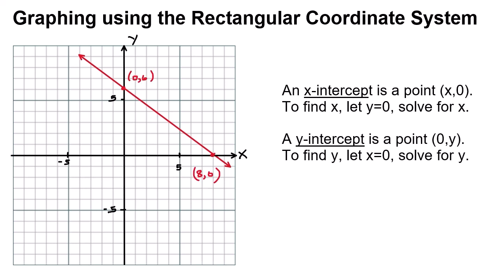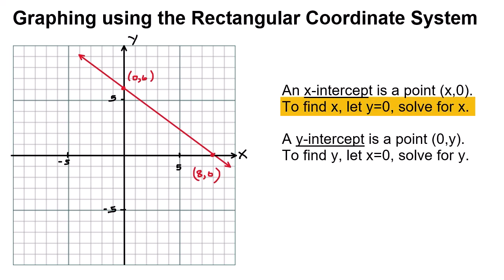Next we'll consider finding the x-intercept — the point where the graph crosses the horizontal or x-axis. That will have the coordinates (x, 0), where x is some value and y equals 0. If we want to find x, we let y equal 0 and solve for x. Similarly, if we want to find the y-intercept, the point where the graph crosses the y-axis, we let x equal 0 and solve for y.